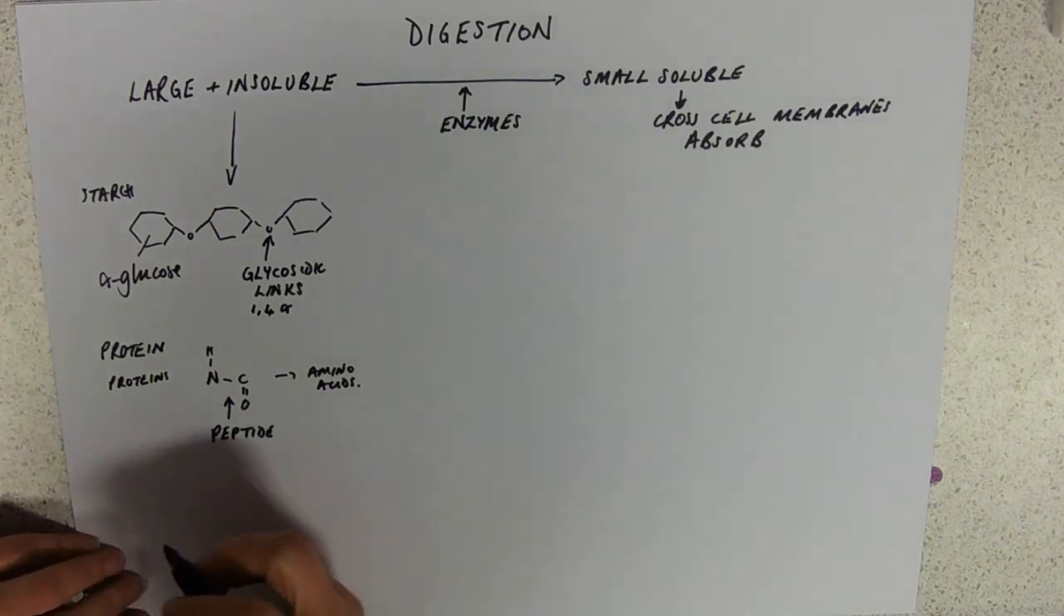And we'll do the detail as we go through of how that happens, how you get these really long molecules into shorter ones. And of course we've got lipid, which is glycerol and three fatty acids, and the bond that you're breaking there, hydrolyzing, would be an ester linkage.